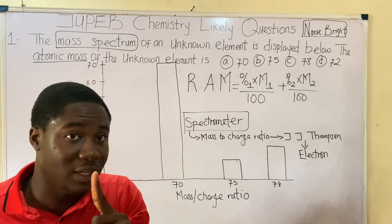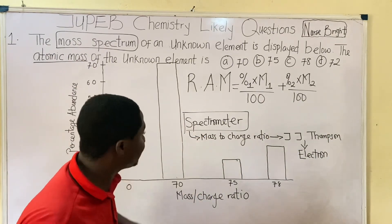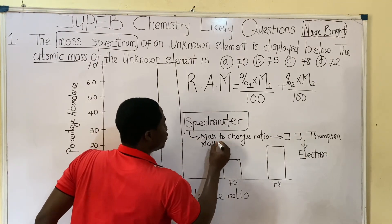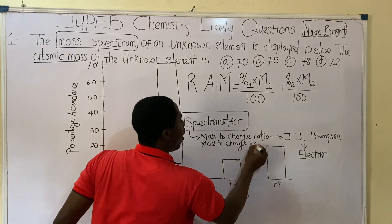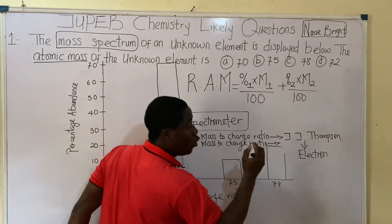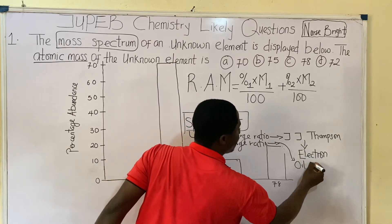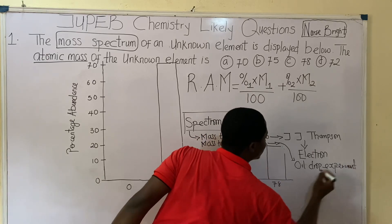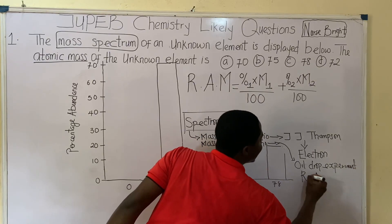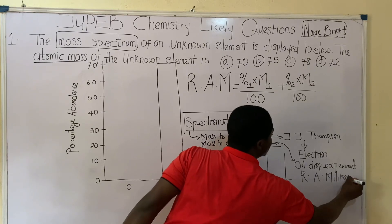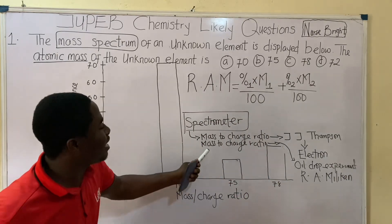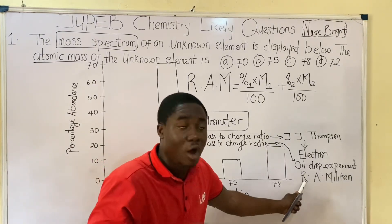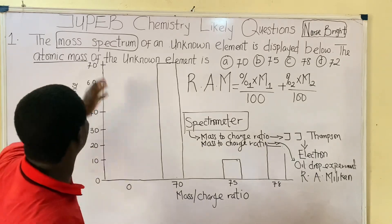Please take note: the discovery of the mass-to-charge ratio using the concept of the oil drop experiment was by the scientist called R.A. Millikan — Robert Andrew Millikan. So if asked who discovered the mass-to-charge ratio using the oil drop experiment, you say R.A. Millikan. The concept of mass spectrum, however, was brought about by J.J. Thompson.